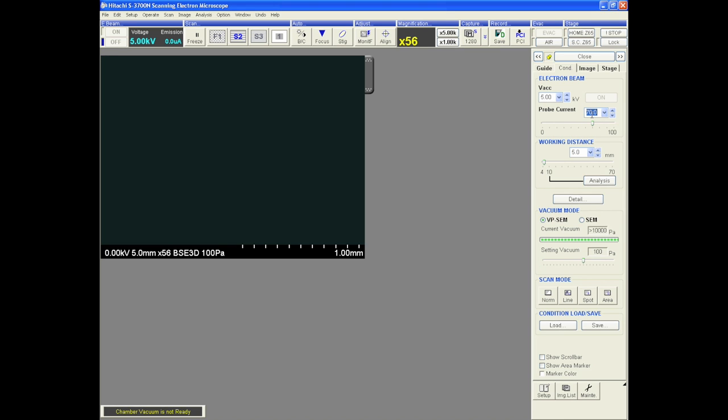Probe current dictates the amount of electrons sending information to the detectors. High probe current is good to begin, but low probe current is good for high magnification.